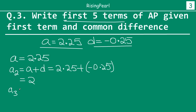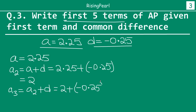So our third term will be equal to second term A₂ plus common difference. So the second term is 2, plus common difference which is minus 0.25. So if we solve this, 2 minus 0.25 will be 1.75.